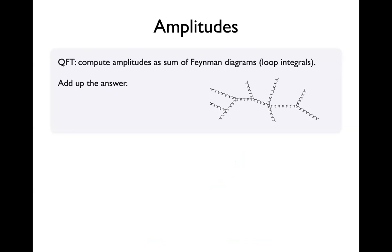We begin by opening our favourite textbook and writing down a bunch of Feynman diagrams. These can be tree diagrams or loop diagrams. We glue vertices and propagators together, evaluate these diagrams, and add up the answer to get our amplitude. There are lots of complicated steps in that, but one of the most complicated things is that for complicated processes, there are very, very many diagrams.